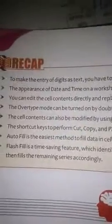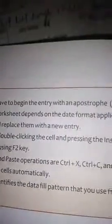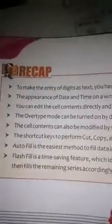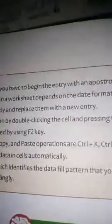Right now, today I am going to do a recap of this chapter. To make the entry of a digit as text, you have to begin the entry with an apostrophe sign. The appearance of date and time on a worksheet depends on the date format applied to the cell. You can edit the cell content directly and replace it with a new entry.